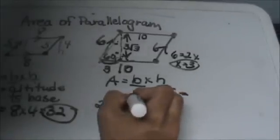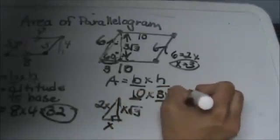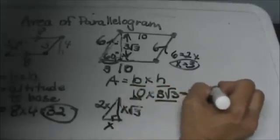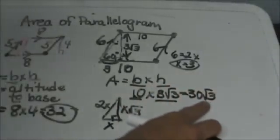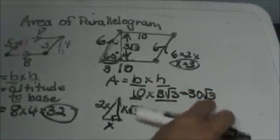Outside portion times outside portion. So 10 times 3 is 30. And there is no radical to multiply that with, so it's just the square root of 3. So 30 square root of 3 is the answer.